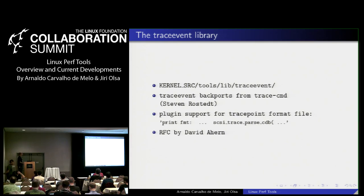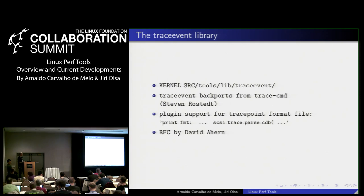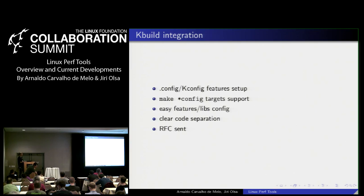The trace event library recently arrived in the kernel tree — it was backported from trace-cmd, made by Steven Rostedt. The current work is syncing with trace-cmd and adding plugin support for trace point format files. This will allow perf to properly decrypt the print format file for functions and display the output correctly in perf script.